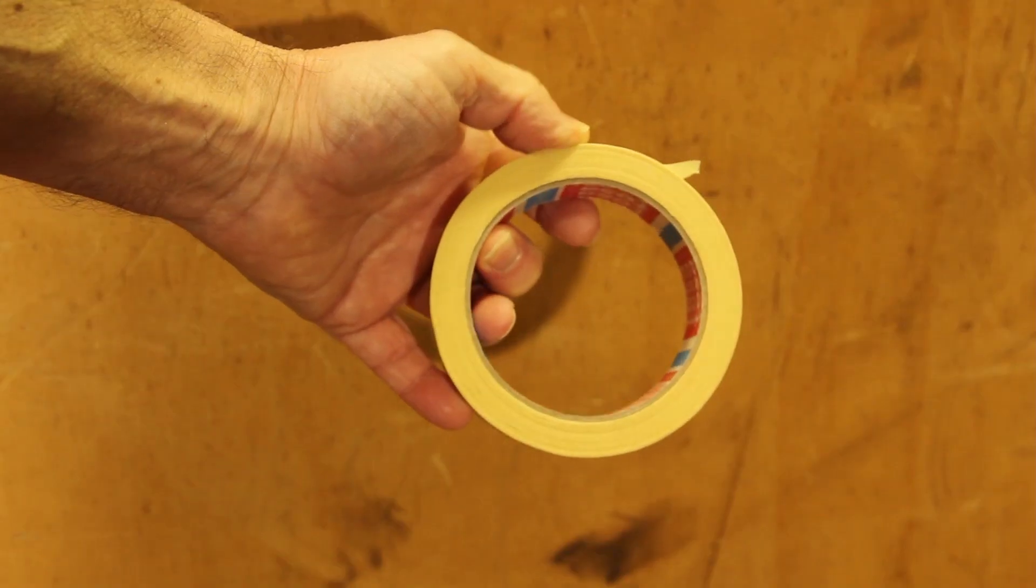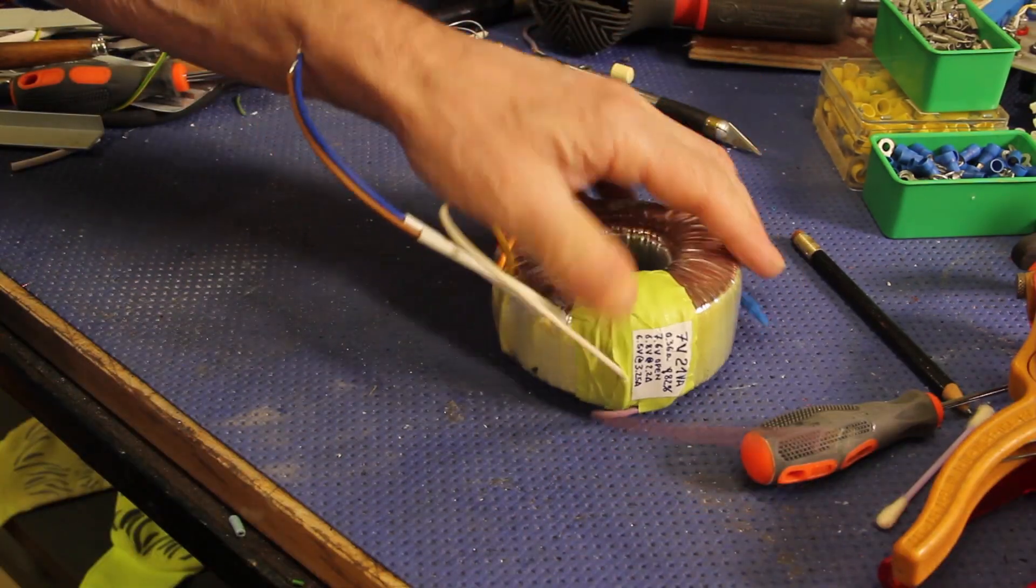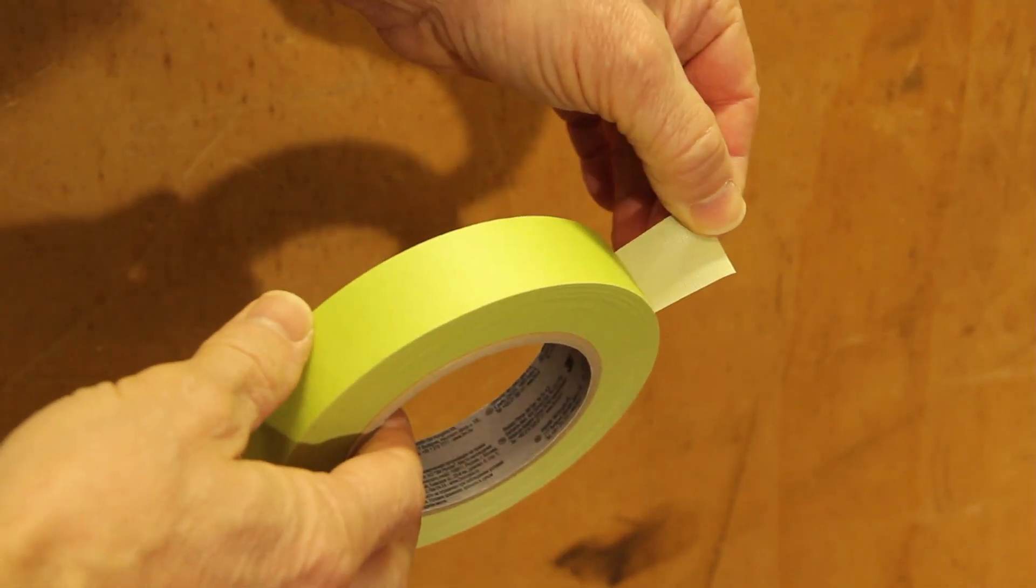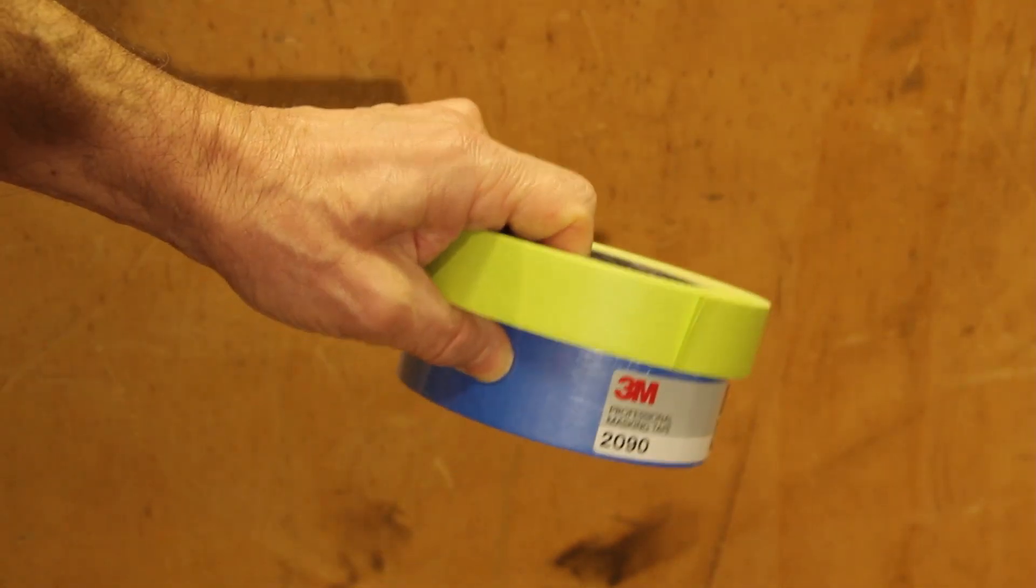Masking tape can be used to hold the wires together and reduce the risk of vibrations. The best type is the one used for external masking, because it has a very high adhesion, while the blue version has the tendency to detach.